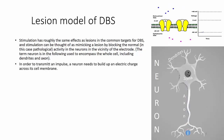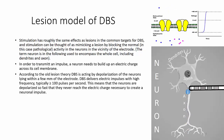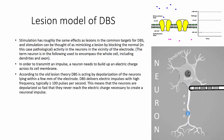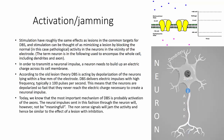The term neuron is used to encompass the whole cell including dendrites and axons. In order to transmit an impulse, a neuron needs to build up an electric charge across its cell membrane. According to the old lesion theory, DBS acts by the depolarization of the neurons lying within a few millimeters of the electrode. DBS delivers electric impulses with high frequency, typically more than 100 pulses per second, meaning that neurons are depolarized so fast that they never reach the electric charge necessary to create a neuronal impulse. Today we know that the most important mechanism of DBS is probably activation of the axons. The neural impulses sent in this fashion will not be meaningful — the nonsense signals will jam the activity, and hence be similar to the effect of a lesion with inhibition.